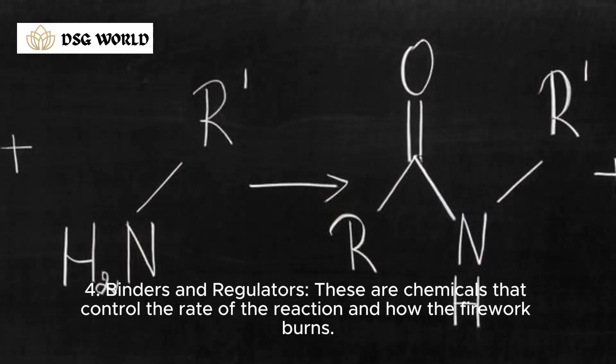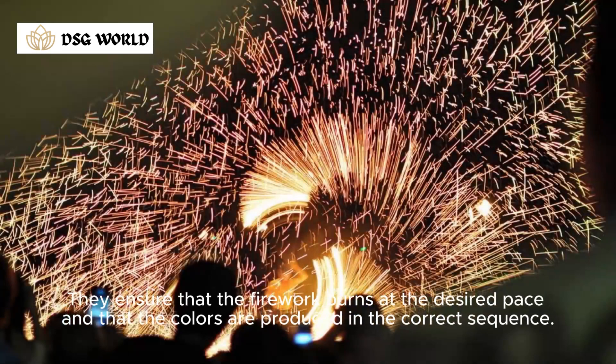Binders and regulators. These are chemicals that control the rate of the reaction and how the firework burns. They ensure that the firework burns at the desired pace and that the colors are produced in the correct sequence.